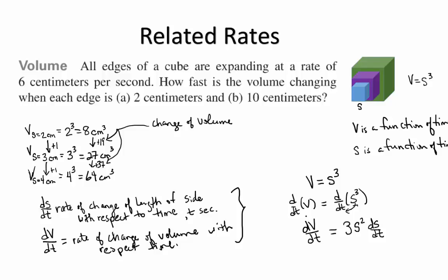And what we have here is now a relationship between the rates. So here we have on the left the rate at which the volume is changing. And this is going to be equal to three times the length of the side squared at that moment times the rate at which the side is changing. Let's start with a.